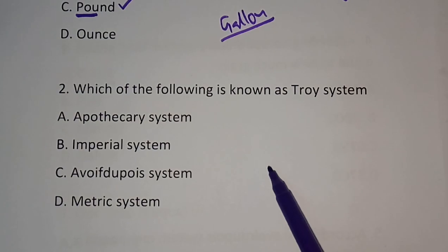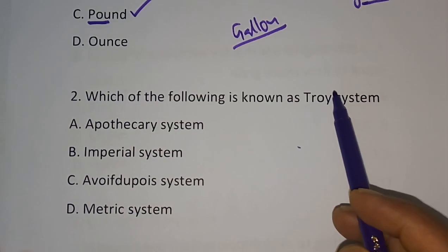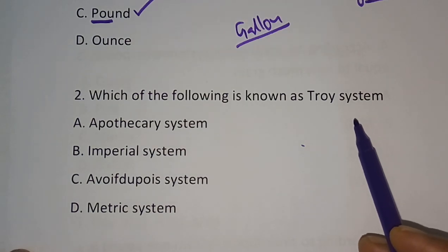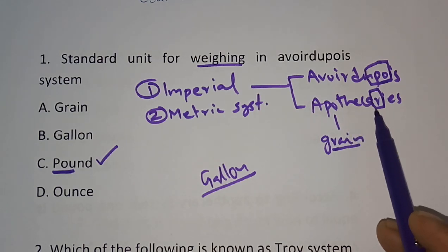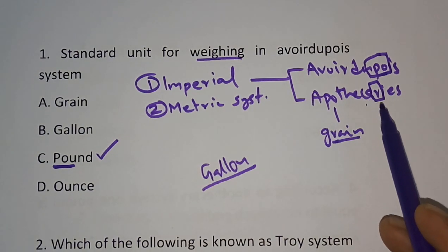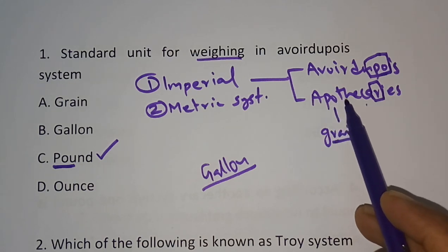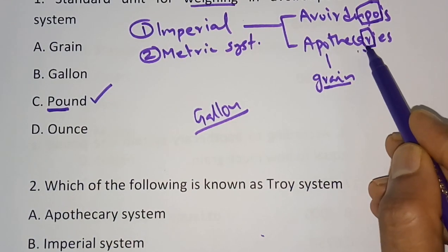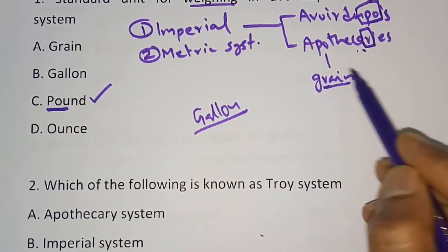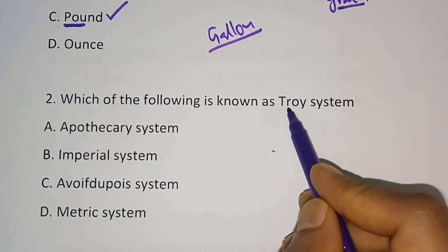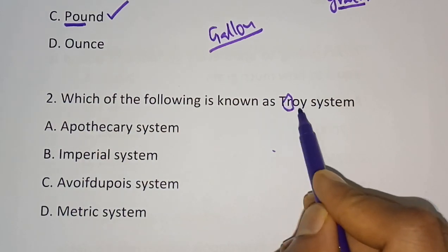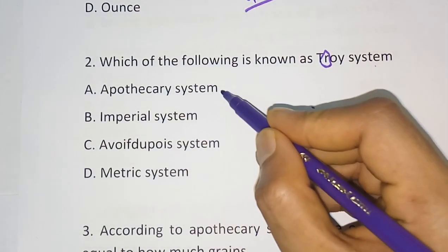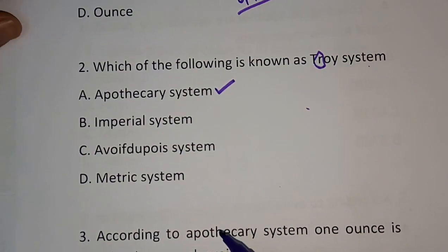Question number 2: Which of the following is known as the Troy system? We studied that the imperial system is classified into two types: avoirdupois and apothecaries. The apothecaries system is also known as the Troy system. The options are apothecary, imperial, avoirdupois, and metric. The correct answer is option A — apothecary system.